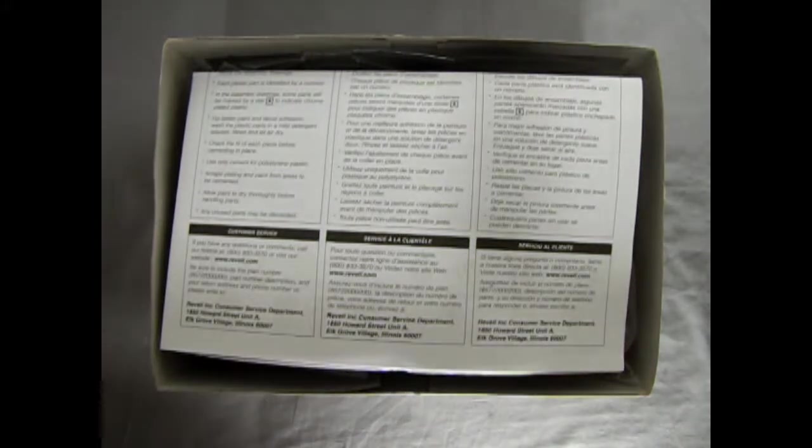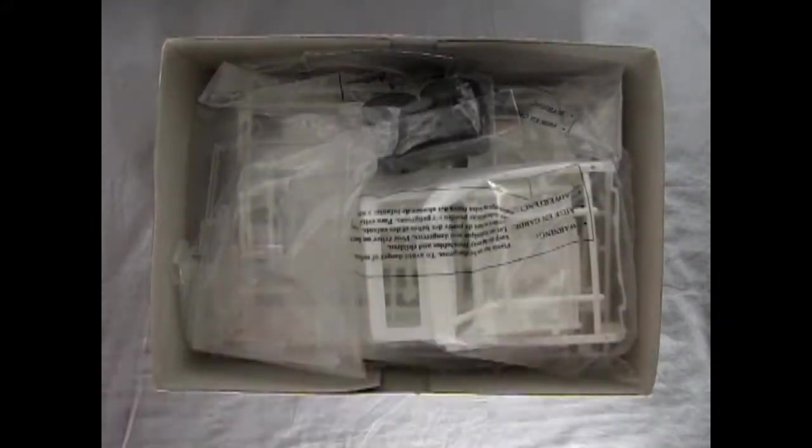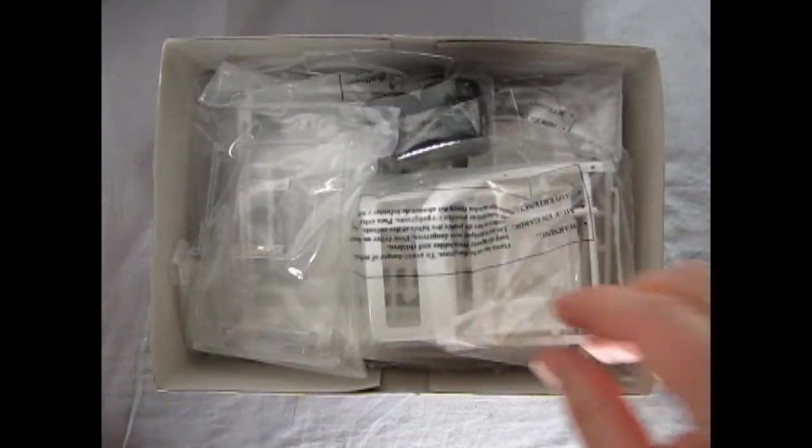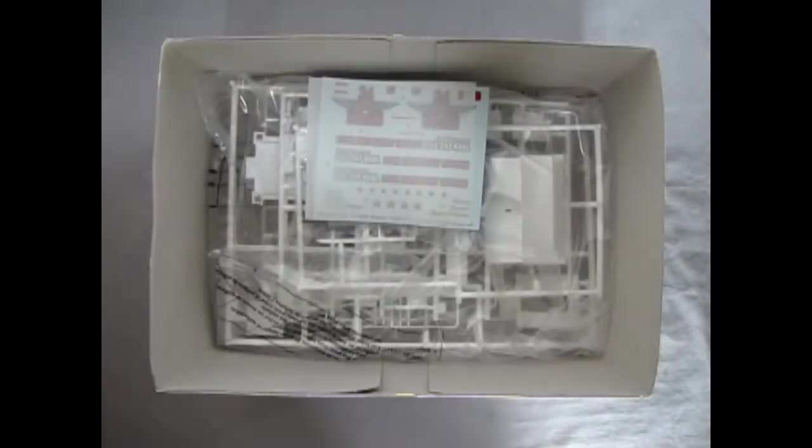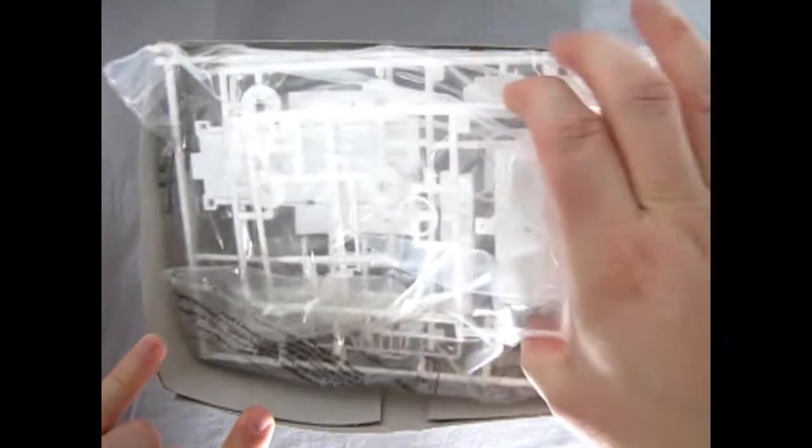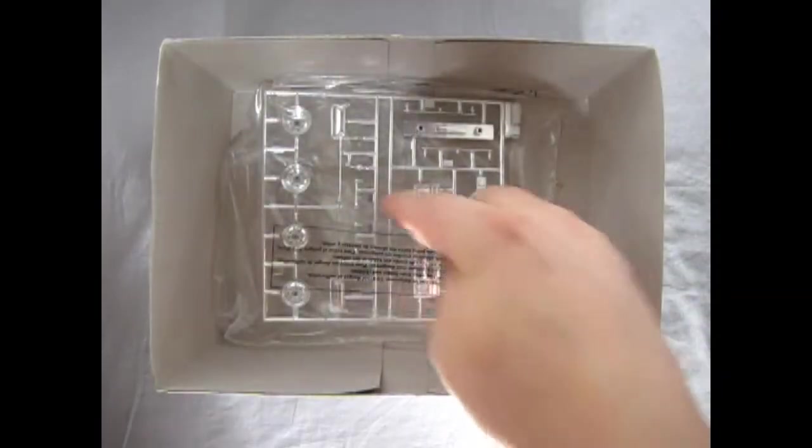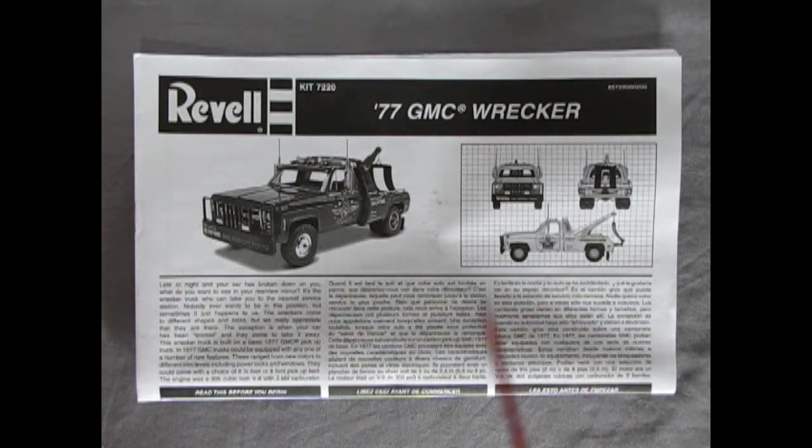Let's take the lid off our 77 GMC wrecker pickup truck, a skill level 2 kit for ages 10 and up in 1:25th scale. Right away we're greeted with our instruction sheet, which looks quite nice. Here we have our glass in a nice bag so it's protected from scratches, then we have our tires, our white plastic components, our decal sheet, and more white plastic components, then our chrome.